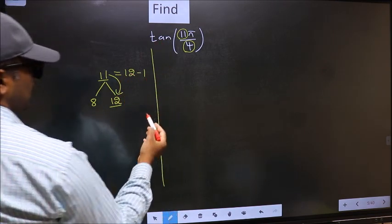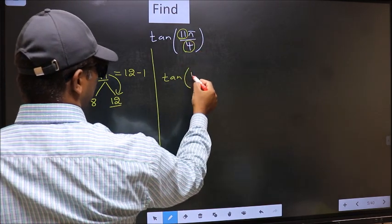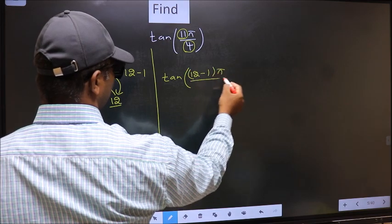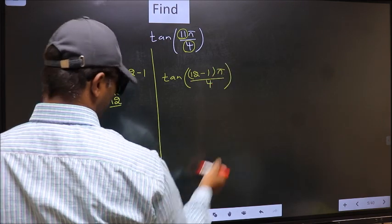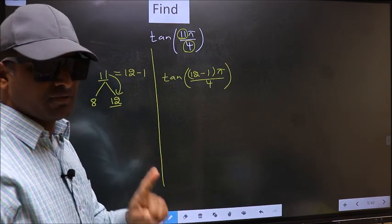So this will become tan. In place of 11, now I write 12 minus 1 π by 4. This is your step 1.